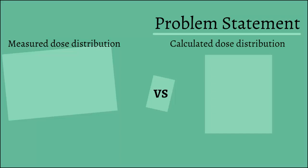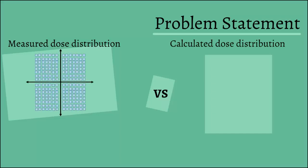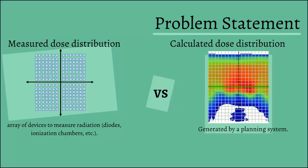The measured dose distribution is an array of instruments that measure radiation. They can be ionization chambers, diodes, and many other instruments.